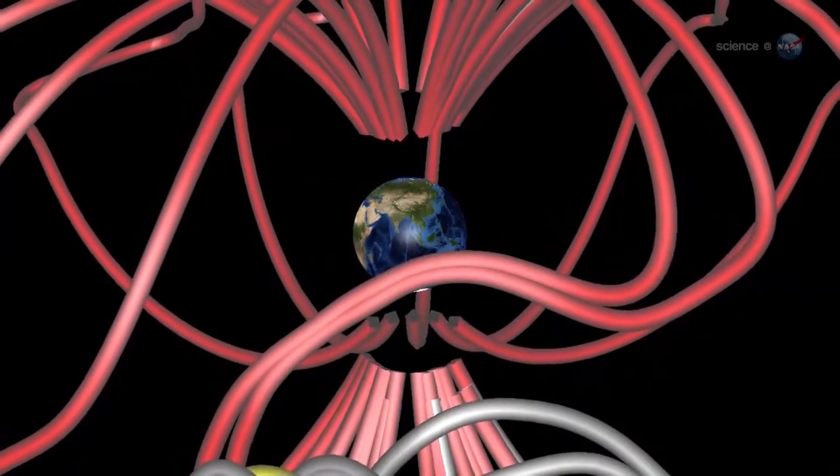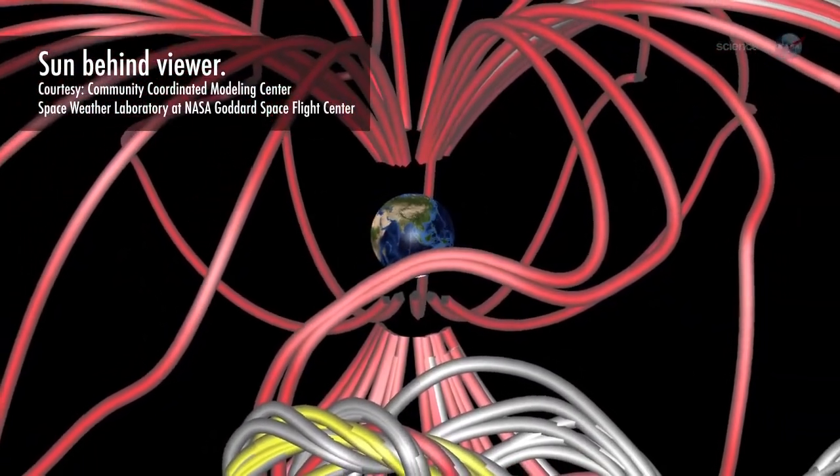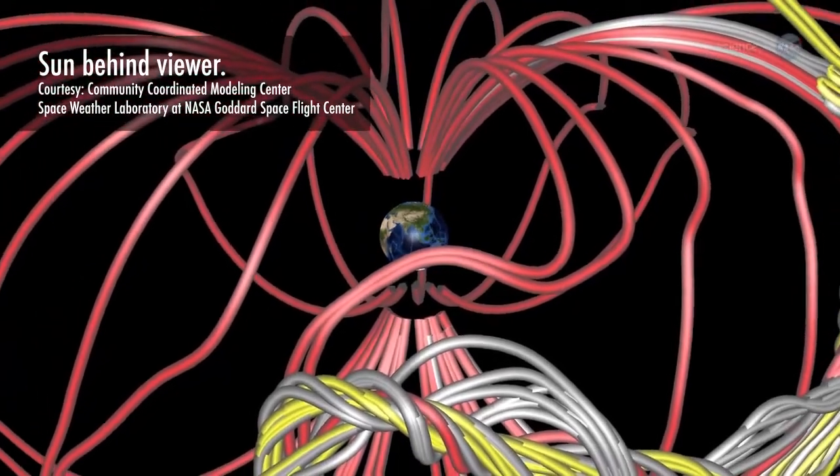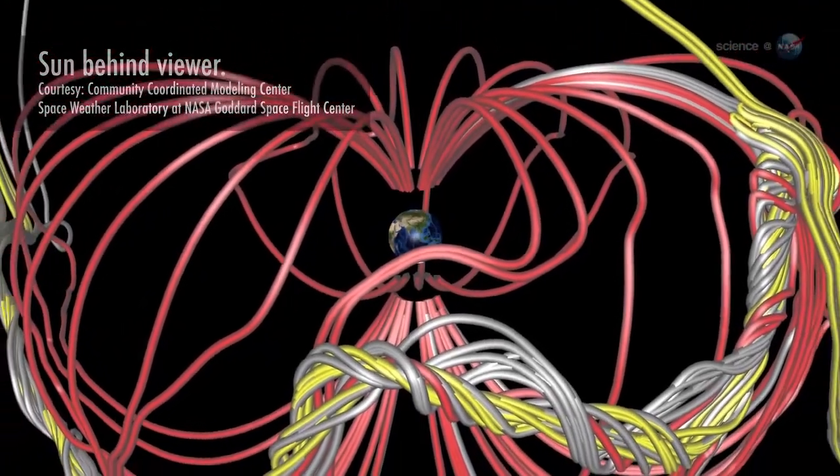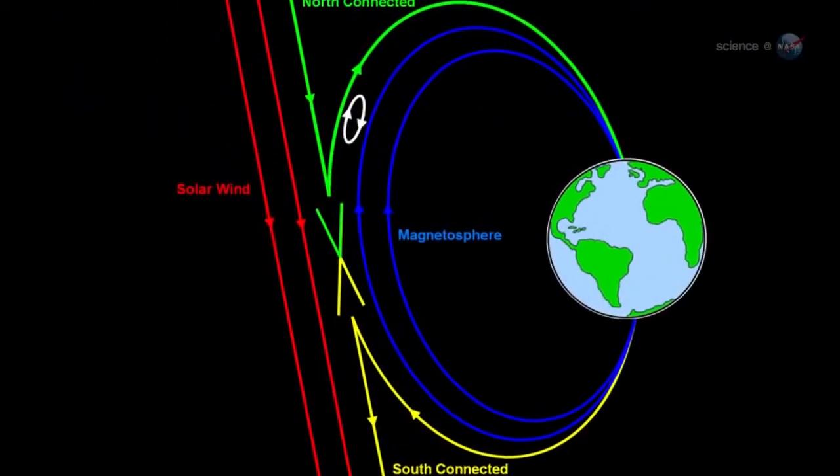Actually, there are signposts, and Scudder has found them. Portals form via the process of magnetic reconnection. Mingling lines of magnetic force from the Sun and Earth crisscross and join to create the openings.